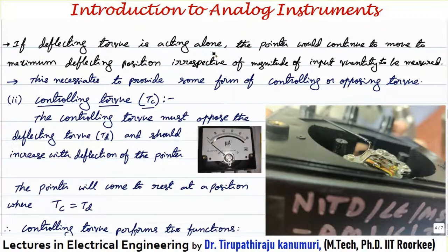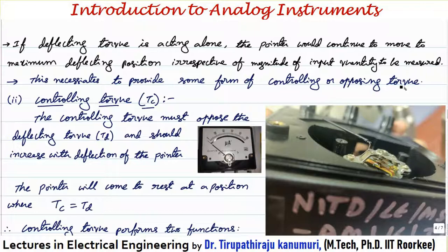If deflecting torque acts alone, the pointer will continue to move to the maximum deflection position irrespective of the magnitude of the input quantity. This necessitates providing a controlling or opposing torque. For example, in a PMMC instrument, when current passes through the coil a torque is produced pushing the pointer — without opposition, it would go directly to the final maximum position regardless of current magnitude. So a controlling torque, such as from a helical spring, is provided to oppose the movement.